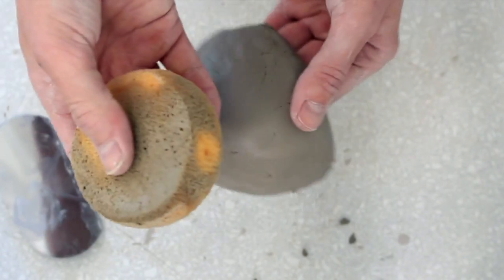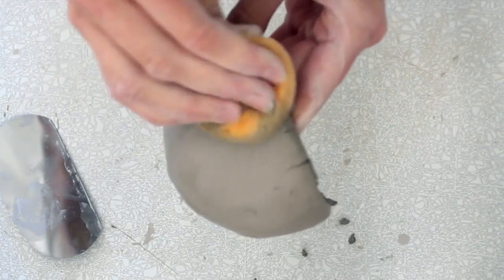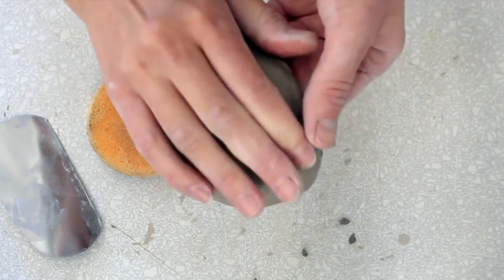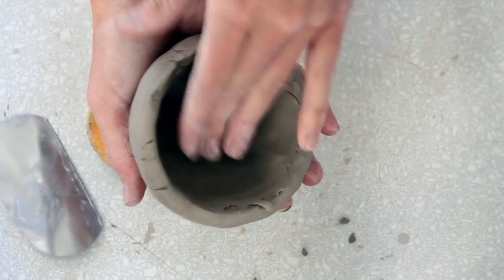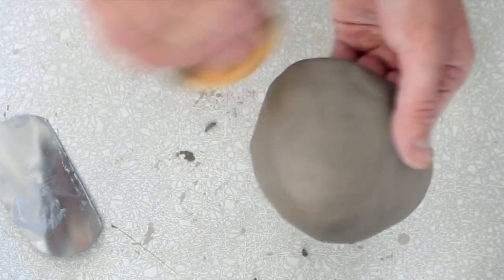Another trick is if you get a damp sponge, you can run over this as well. But if you use a really wet sponge, you're going to create slip on the surface and it's going to actually end up cracking your pot more because this will dry at a different rate to the rest of the clay and it will cause cracks to happen. So just a damp sponge.